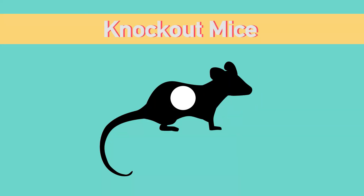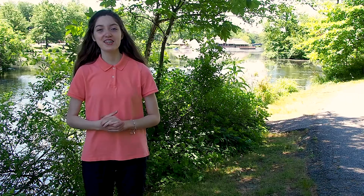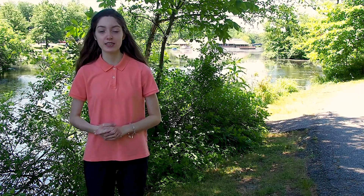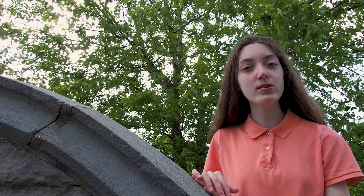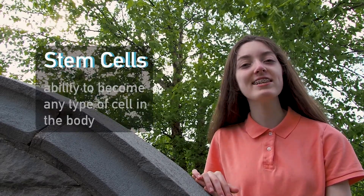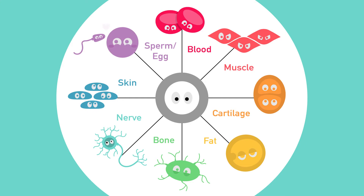Knockout mice are typically employed to study the effects of specific genes being inactivated. The genetic knockouts are developed in laboratories through a meticulous process, beginning with embryonic stem cells. Stem cells, also known as the body's master cells, are unique because they have the ability to become any type of cell in the body. If each color in the rainbow represented a different cell type, stem cells would cover the whole spectrum.